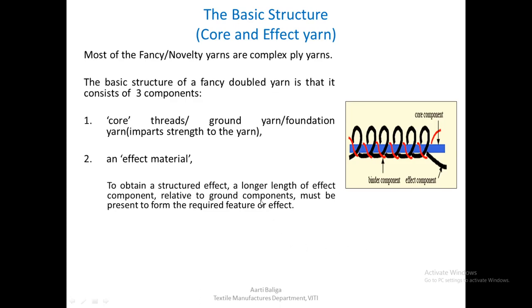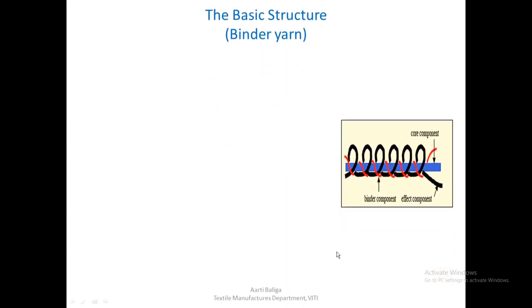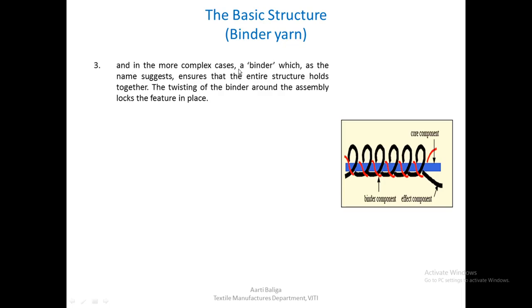This extra length of effect component must be provided during twisting. The buckling and twisting of the effect component onto the ground component produces the aesthetic effect. The third component is the binder yarn, shown in red. In more complex fancy yarns, a binder component is required. The binder ensures the entire structure holds together — the twisting of the binder around the assembly locks the feature in place.